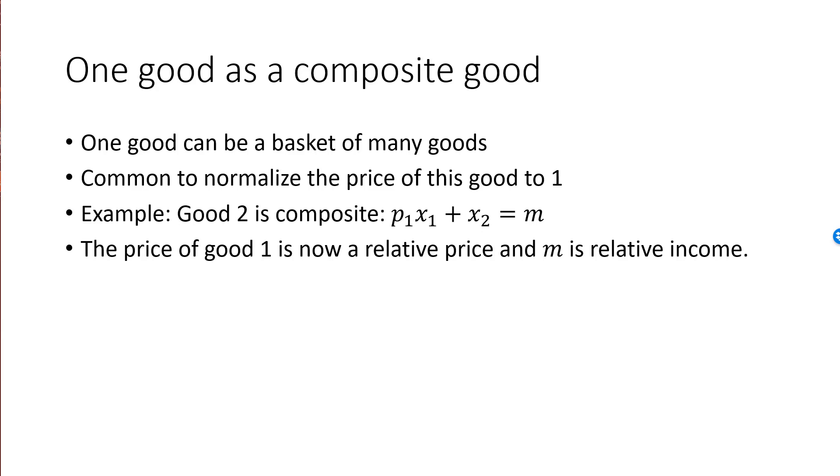Similarly, m is the relative income in terms of baskets. If m is equal to 20, the interpretation is now that your entire income can buy you 20 baskets.